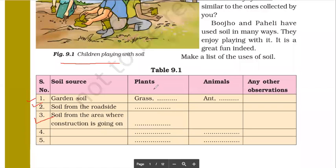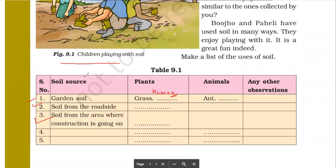That dead and decaying layer of soil is called humus, which we will discuss again. Garden soil is very fertile. Why? Because it contains lots of nutrients and minerals because of this dead and decaying matter, which is humus. Garden soils are generally moist, because there's lots of water in that.